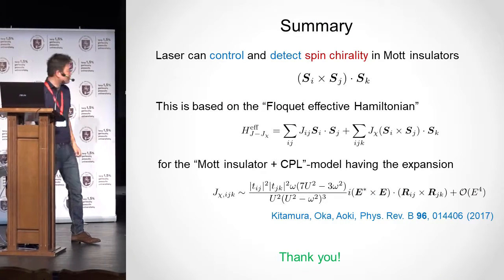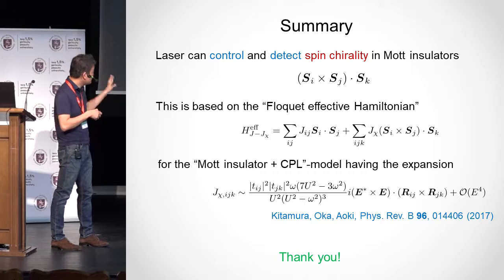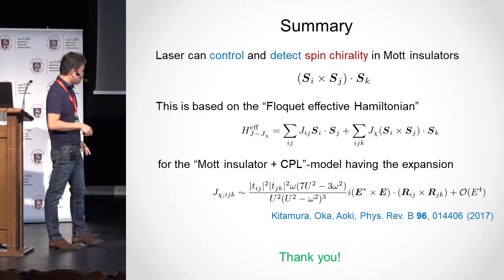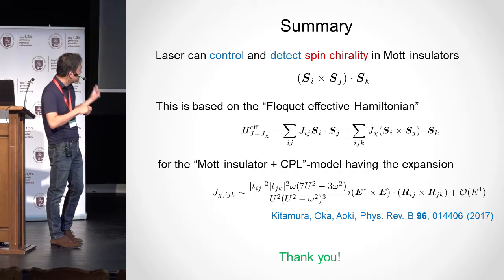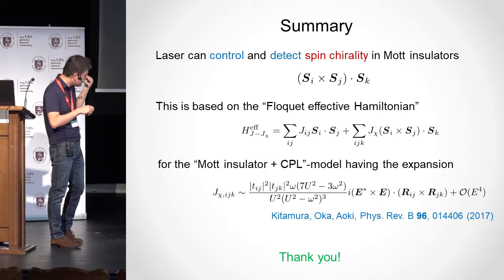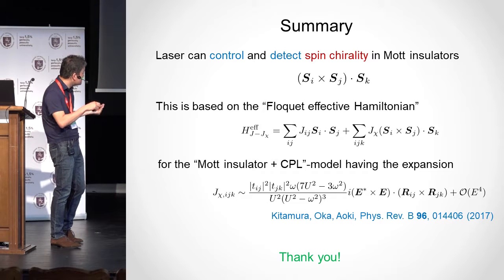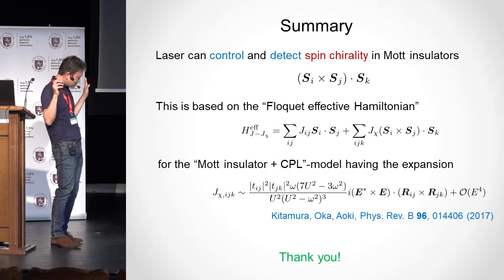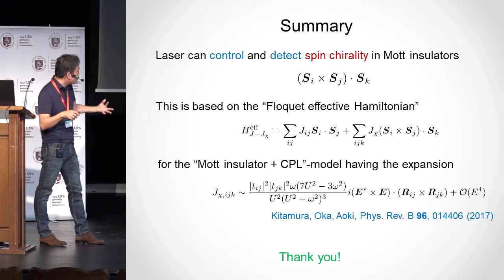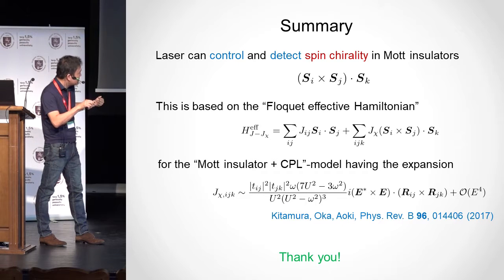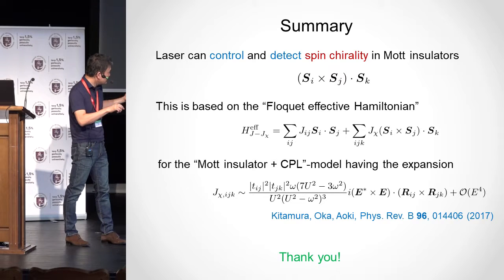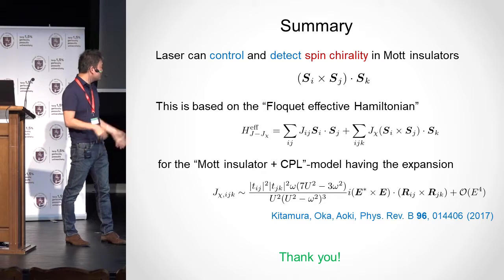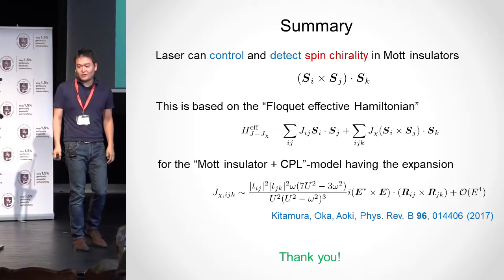In summary: laser light, especially circular polarized light, can control and detect spin or spin scalar chirality in Mott insulators. This prediction is based on the Floquet effective Hamiltonian — the J-J-χ model — where J-χ is related to the circular polarized light intensity through a specific analytical form. Thank you very much for your attention.